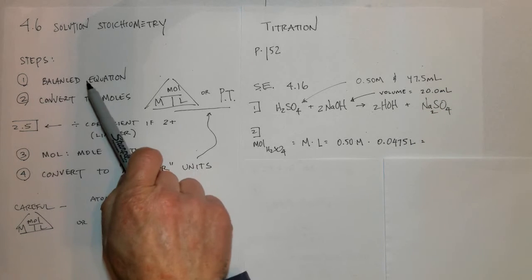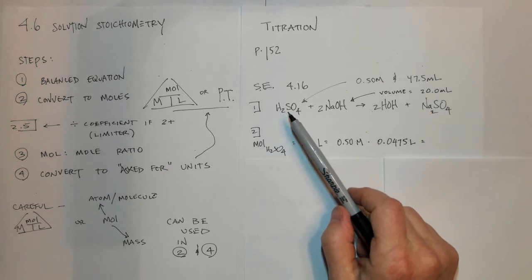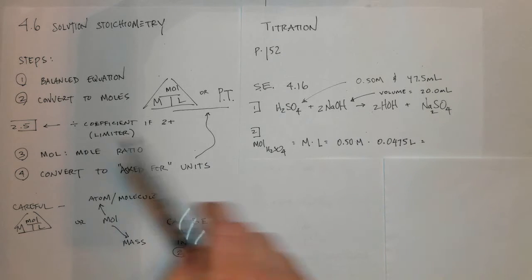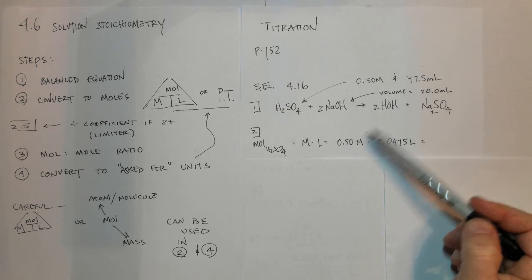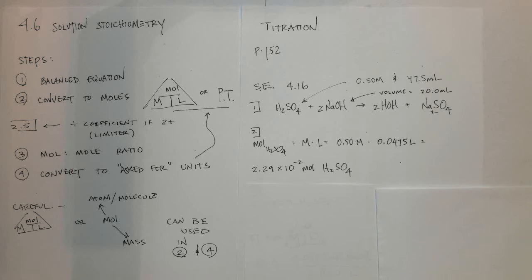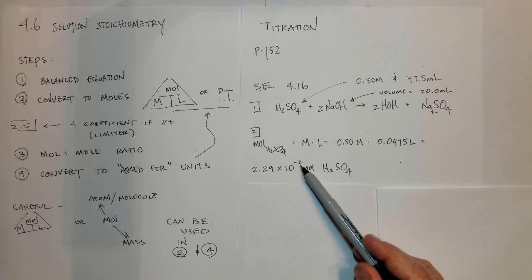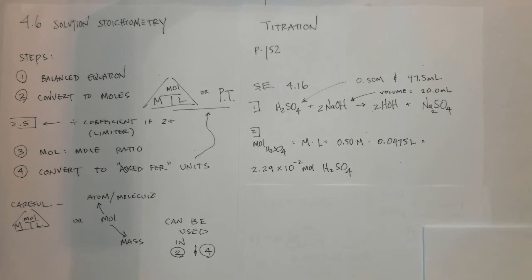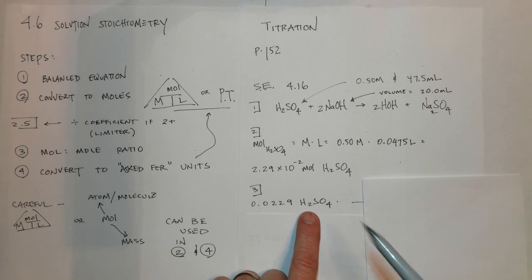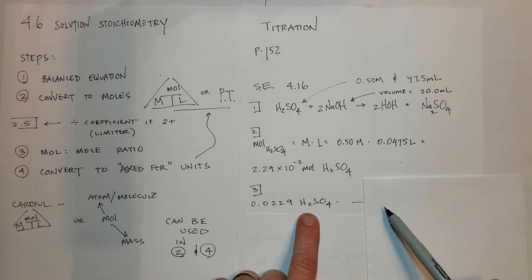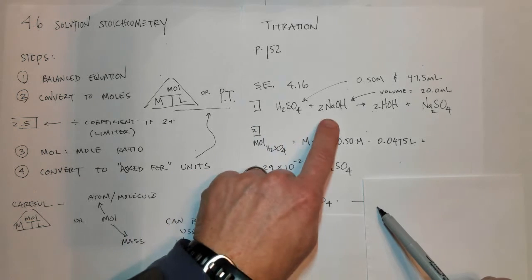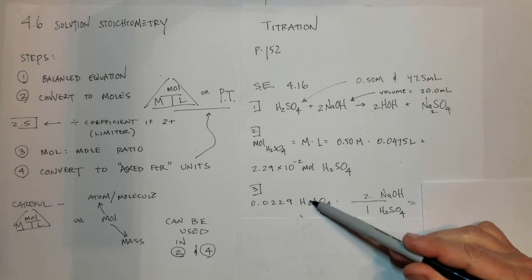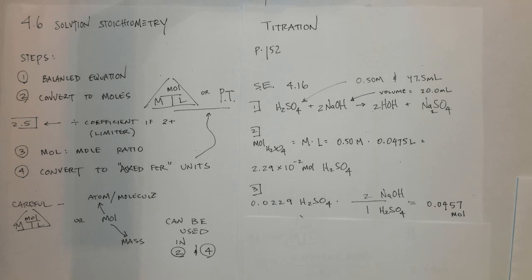Follow these steps just like the solution stoichiometry steps we've been working on. Step one: write the balanced chemical equation between H₂SO₄ and NaOH and balance it. Step two: convert to moles. We're given volume and concentration for H₂SO₄, and multiplying those together gives 0.0239 moles of H₂SO₄, which can also be written in scientific notation. Step three: use the mole-to-mole ratio from the balanced equation. Place H₂SO₄ on the bottom to cancel, and NaOH — the desired unit — on top with a coefficient of 2. Multiplying gives 0.0475 moles of NaOH.